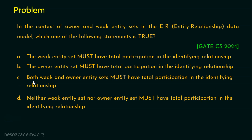Option C — both weak and owner entity sets must have total participation — is certainly incorrect, because the weak entity set must have total participation but the owner entity set may or may not. Option D — neither weak nor owner entity set must have total participation — is also incorrect, because the weak entity set must have total participation. So, the correct answer is option A: the weak entity set must have total participation in the identifying relationship. Thank you for watching.